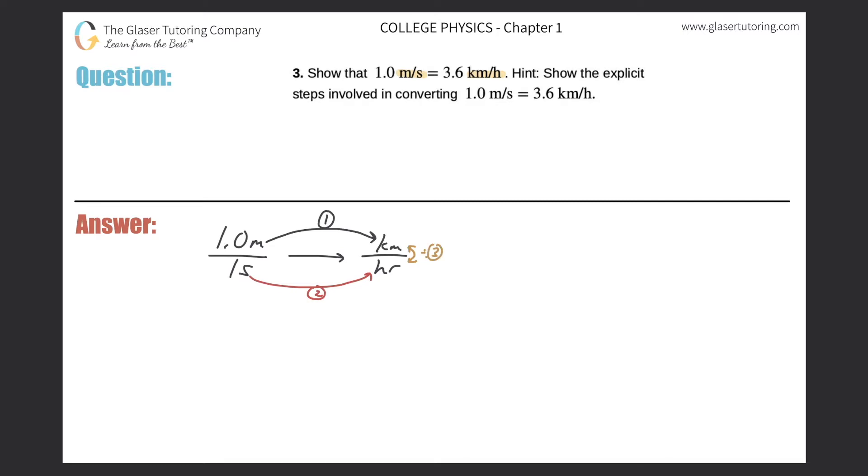Part number one: 1.0 meters, convert that into kilometers. Let's write down what we're given: 1.0 meters. I'm going to write meters in the denominator and kilometers in the numerator because I do know the relationship between the two - there are 1000 meters in one kilometer. Therefore, this number should work out to be 0.001 kilometers. That's the answer to part one.